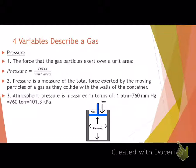Essentially, when you measure pressure — like using a tire gauge — you're measuring how much speed those gas particles are colliding with the walls of their container. More pressure means they're colliding with more energy at a faster rate; less pressure means they're colliding with less energy at a slower rate.